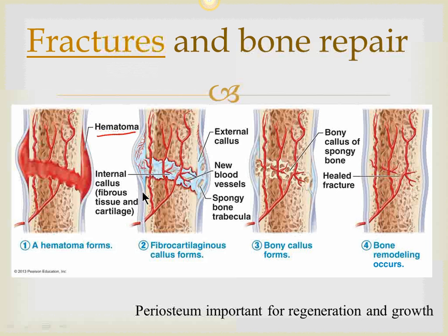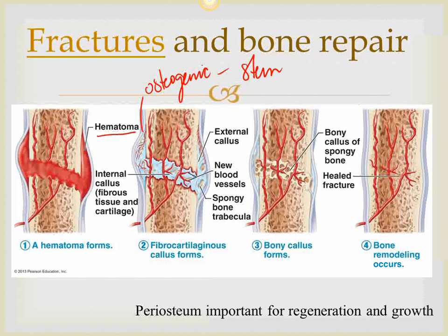The periosteum has osteogenic cells — stem cells which can give rise to osteoblasts and osteoclasts. Along with fibroblasts from the fibrous tissue of the periosteum, they begin to lay down cartilage and fibrous tissue. The blood is removed by macrophages and a fibrocartilaginous callus is formed, which is soft and keeps the two ends together. It attracts blood vessels, blood brings calcium, and calcium gets deposited — so from a fibrocartilaginous soft callus, a bony callus is formed.